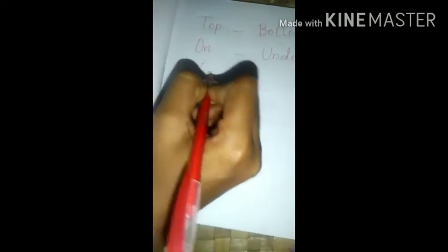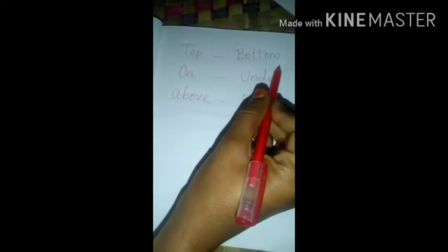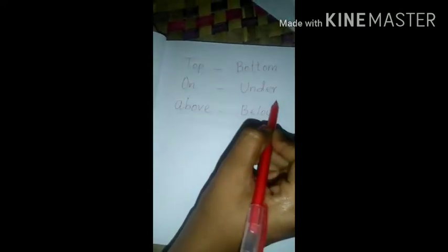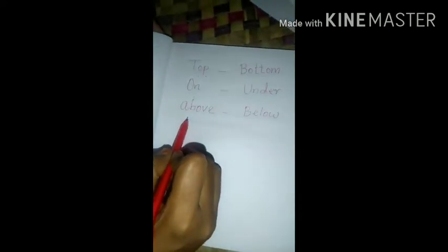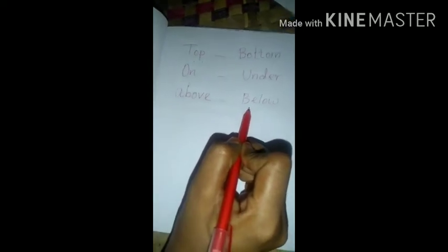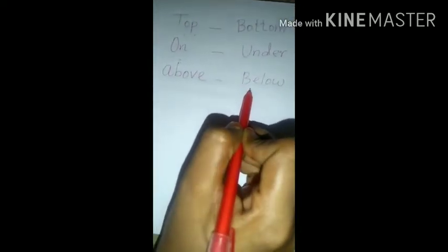Then 'above' — A-B-O-V-E — means mele. 'Below' — B-E-L-O-W — means keele. So: top means mele, bottom means keele; on means mele, under means keele; above means mele, below means keele.